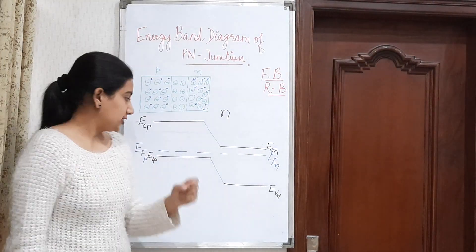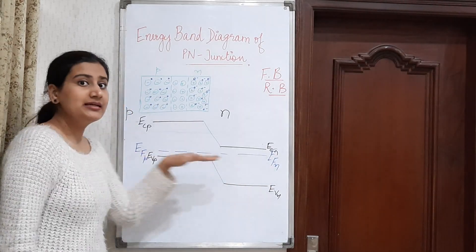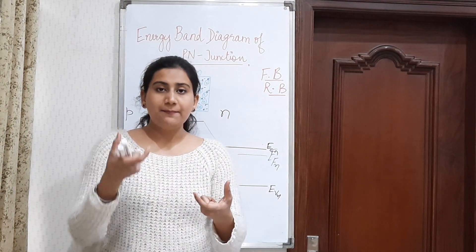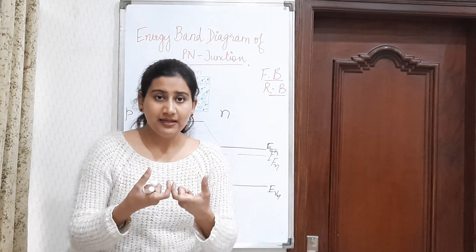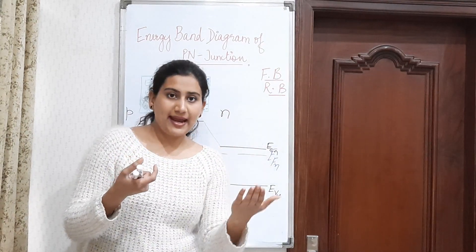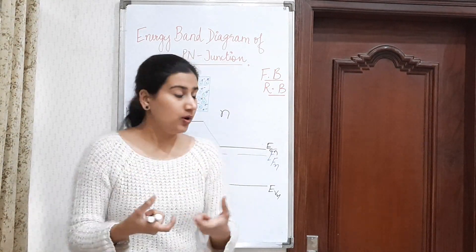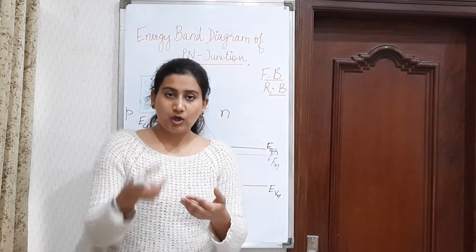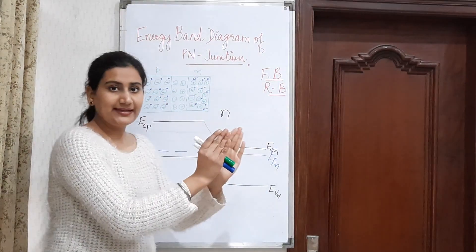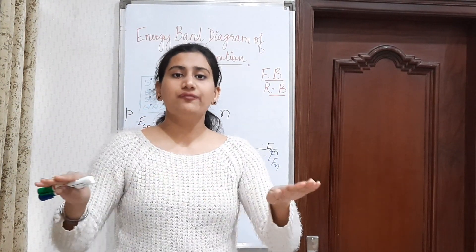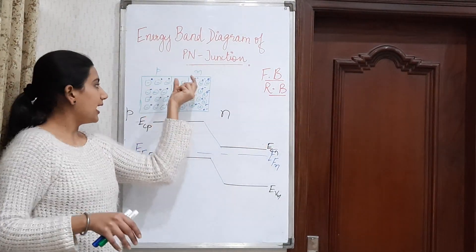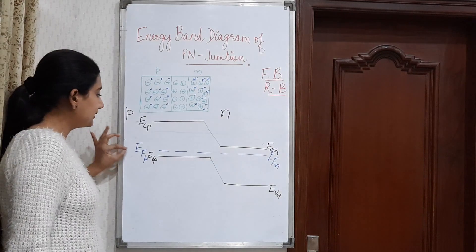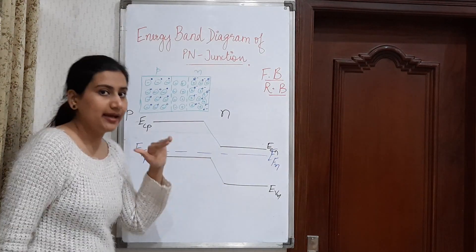Why is the Fermi level of P-type and N-type at the same level? The answer is that when P and N combine to form a P-N junction, there is movement of charges — electrons move from N to P-type. But after some time, a depletion region forms and no further diffusion is possible. This is the state of equilibrium. The equilibrium state is specified by the Fermi level being at the same level for both P and N.